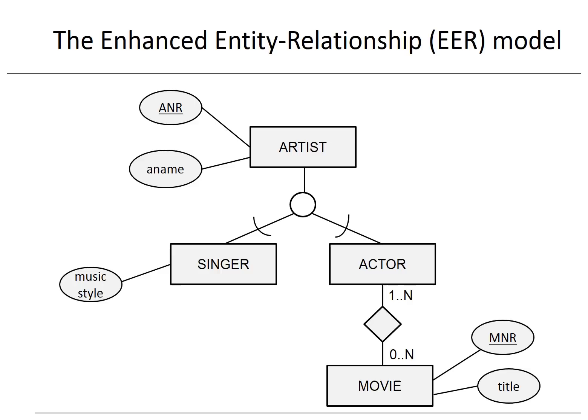Here you can see an example of a specialization. The artist superclass is specialized into the subclasses singer and actor. Remember, an actor is an artist and a singer is an artist. An artist has a unique artist number and an artist name. A singer has a music style. An actor can act in zero-to-n movies; vice versa, in a movie, one-to-n actors can act. A movie has a unique movie number and a movie title.